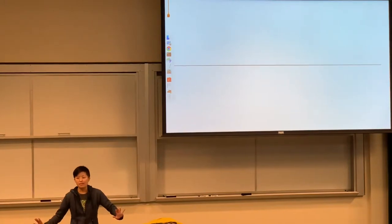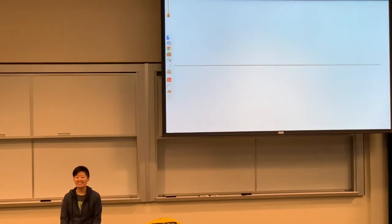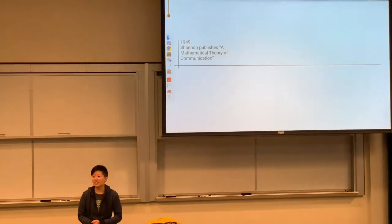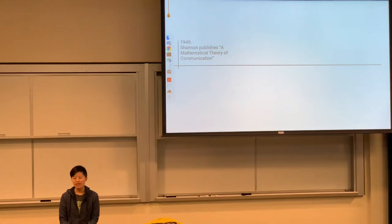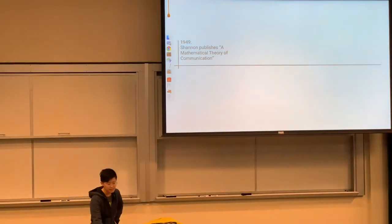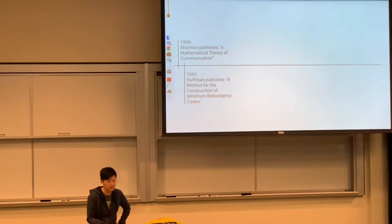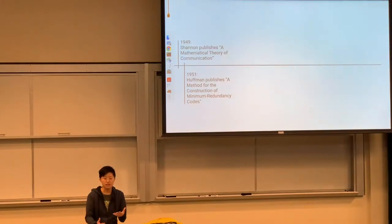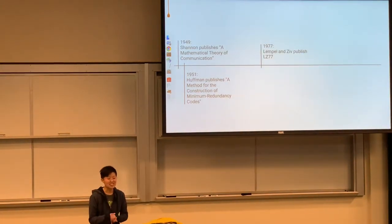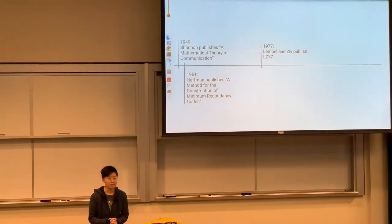Let's set the stage with some history. The field started in 1949 when Claude Shannon published A Mathematical Theory of Communication. Fast forward only two years, and Huffman designed the Huffman code through the paper 'A Method for Construction of Minimum Redundancy Codes.' Huffman codes and similar algorithms are very important when it comes to practical compression. Then in 1977, Lempel and Ziv published LZ77, and in 1984 Terry Welch published an algorithm called LZW — Lempel-Ziv-Welch — a variant of LZ77 that we'll examine in more detail.